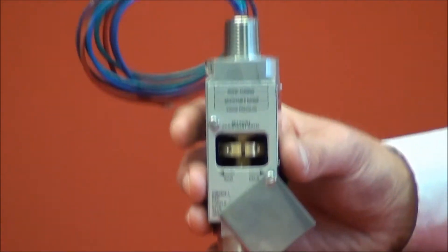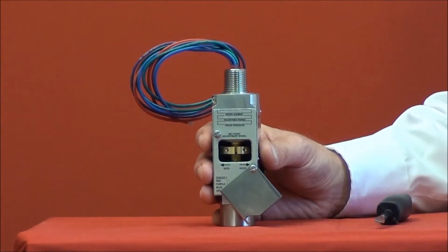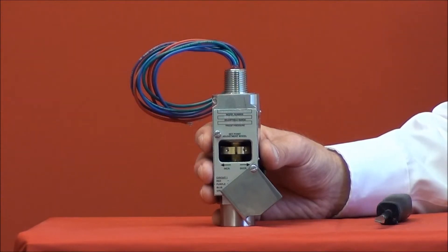The device comes in a variety of ranges from vacuum all the way up to 10,000 PSI. The high capacity contacts are rated for 11 amps at 125 or 250 volts AC and 5 amps at 30 volts DC.